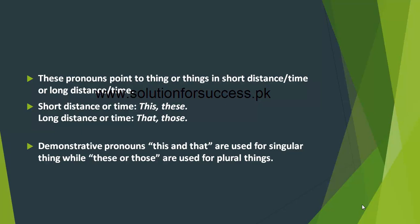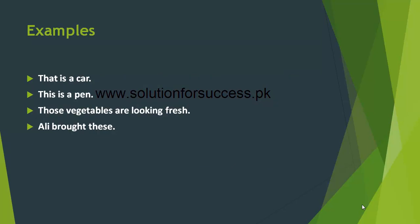Demonstrative pronouns examples: That is a car. — وہ ایک car ہے۔ This is a pen. — یہ ایک pen ہے۔ Those vegetables are looking fresh. — وہ سبزیاں دیکھنے میں تازہ نظر آ رہی ہیں۔ Ali brought these. — Ali یہ لے کے آیا ہے۔